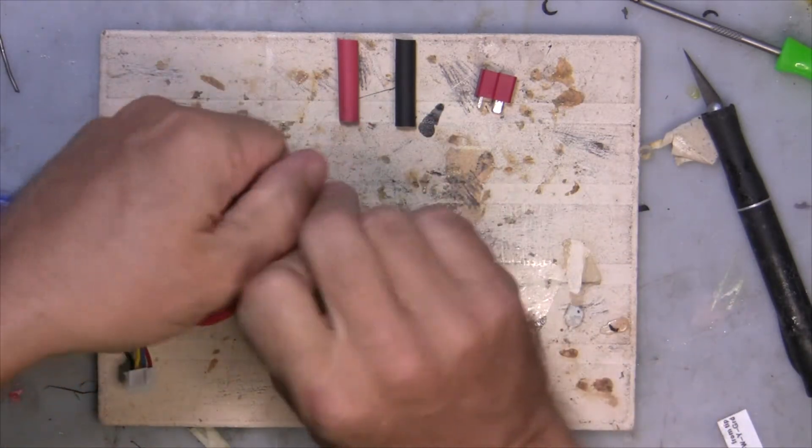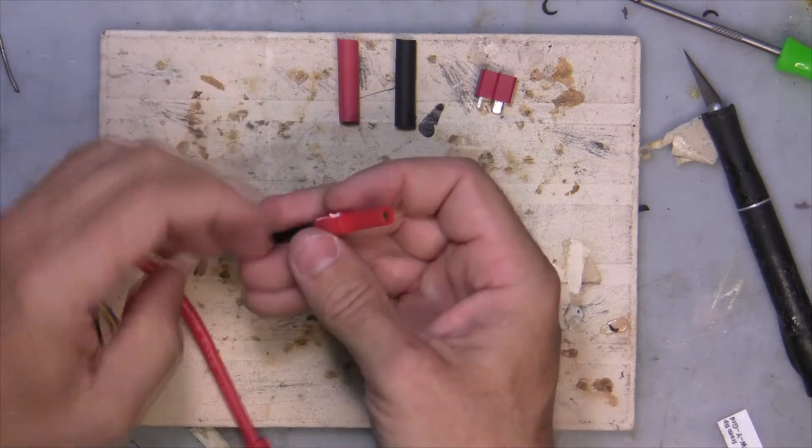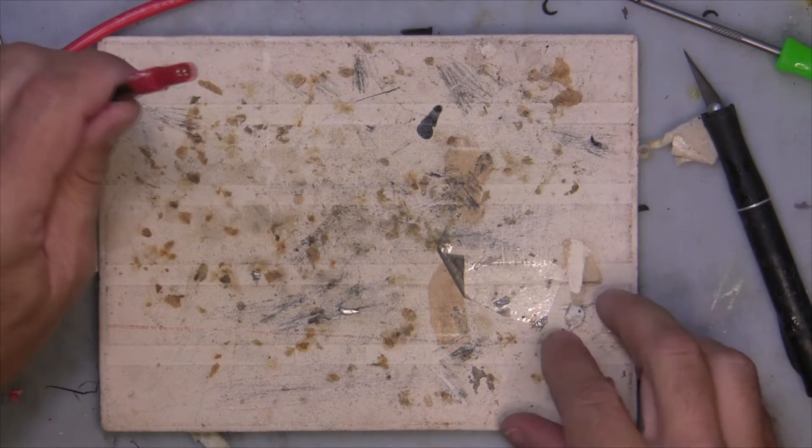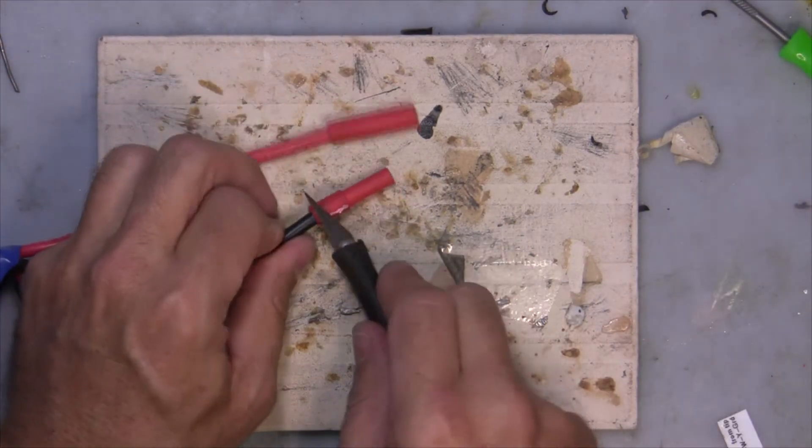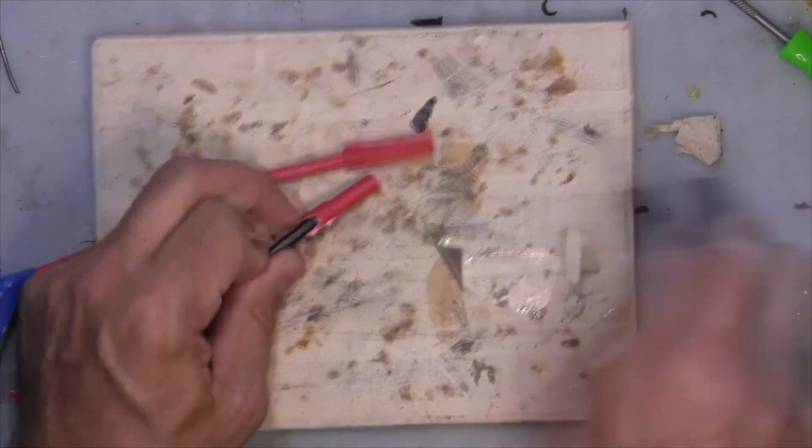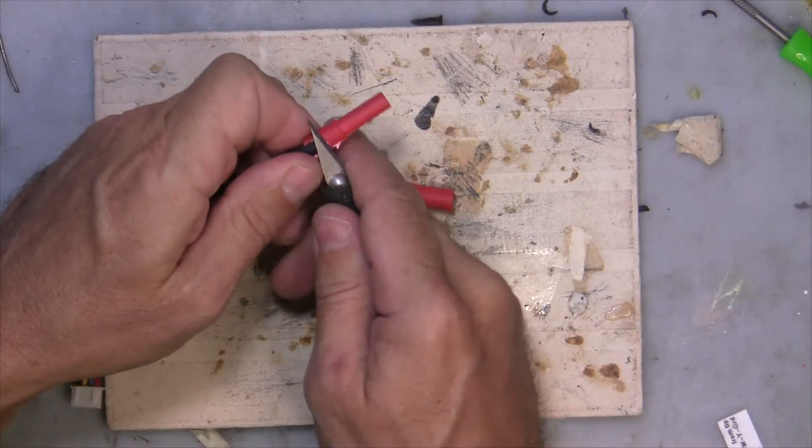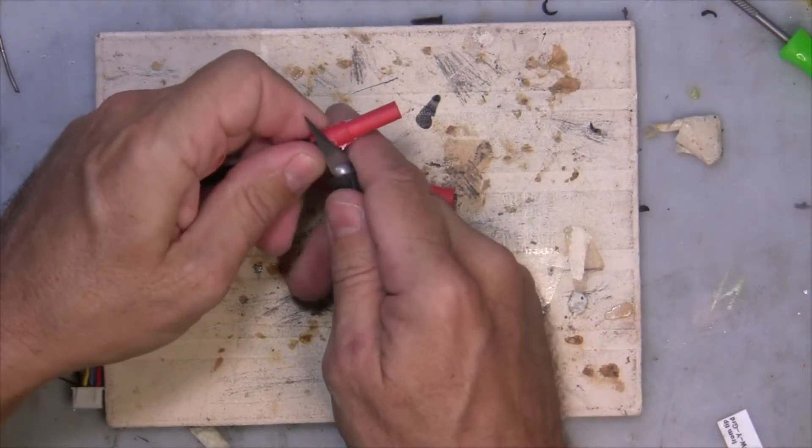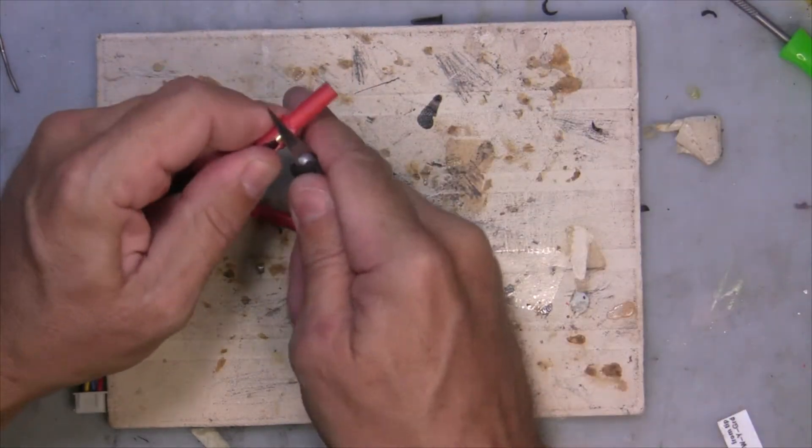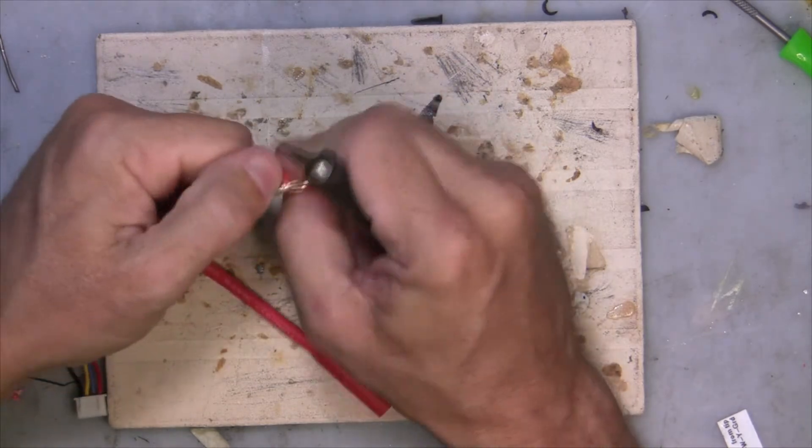So this just twists like that and kind of splits it so you get it into two connectors. And then I'm just going to use an X-Acto blade and remove this, kind of cut back the plastic on this connector. I'm just going to peel that off.